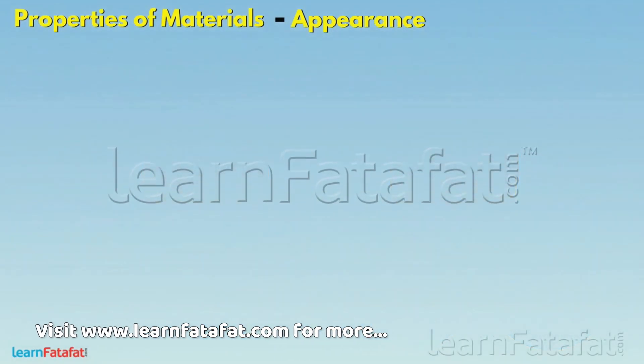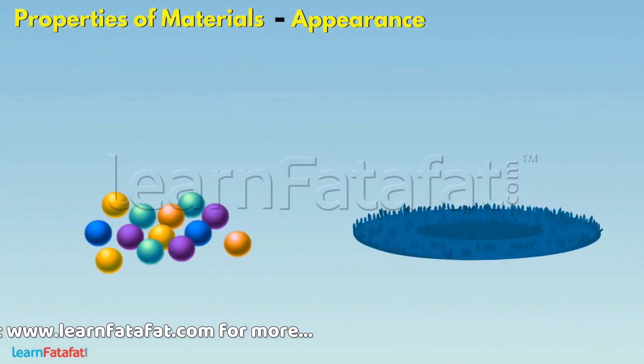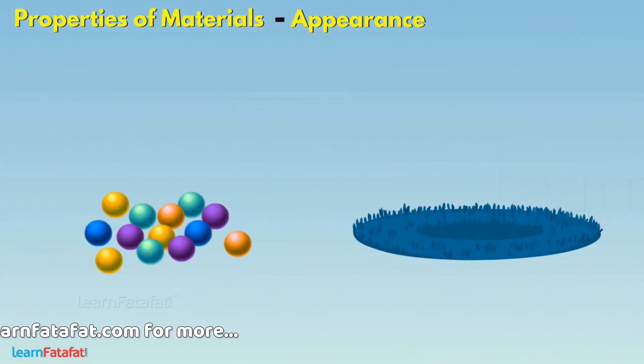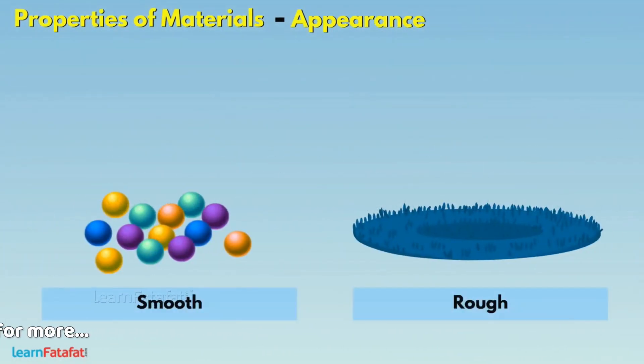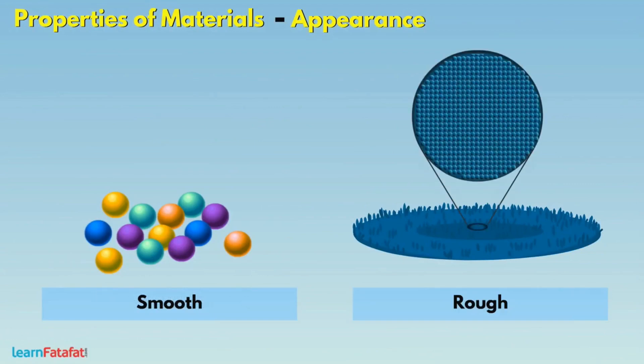If you touch some objects, they appear either smooth or rough. The roughness is due to bumps on the surface.